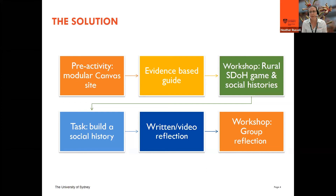Then we meet the students face to face, and in that session we do a rural social determinants of health game. We have a board laid out and students are given a player profile; they then either get a risk or protective card depending on which cards they land on. We found it's a really useful and interactive way for students to see how their health and wellbeing journey progresses, or is actually negatively affected by their social circumstances.